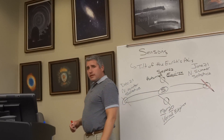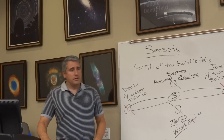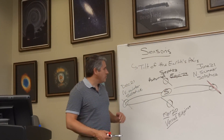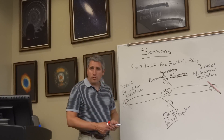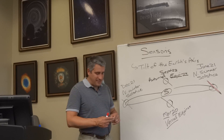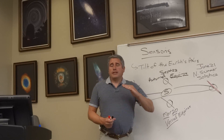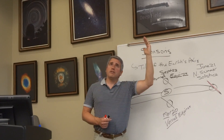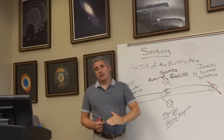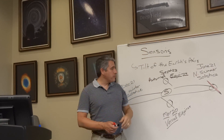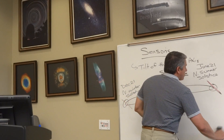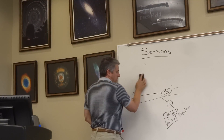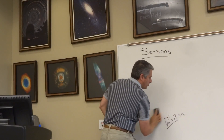So again, what causes the seasons? The tilt of the Earth's axis. The days vary from being quite long in the summer to quite short in the winter, and that also varies the intensity of the sun. The sun can vary 23.5 degrees on the high side and 23.5 degrees on the low side. If we were to chart the path of the sun over the course of the year, we call that path the ecliptic — the path of the sun over the course of the year.